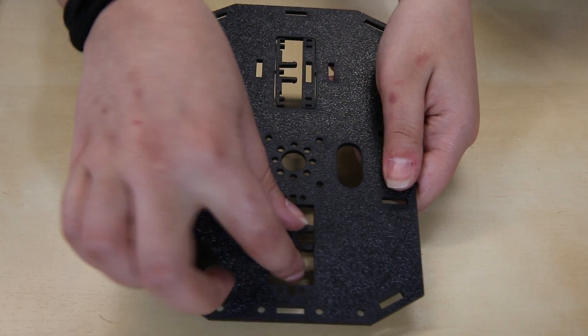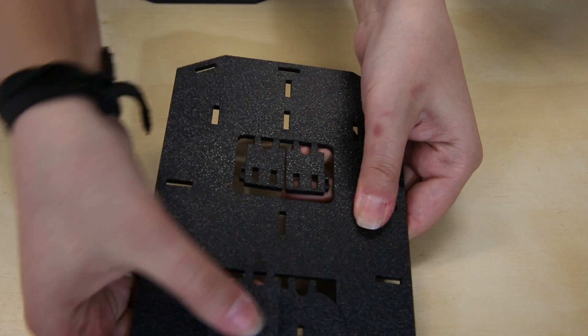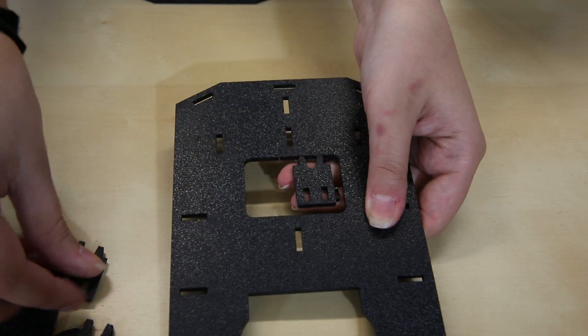To start off with, the Shadow Chassis doesn't need any additional tools, but we will need to start off by snapping these parts out of the bases.